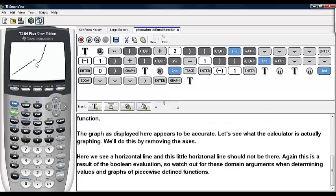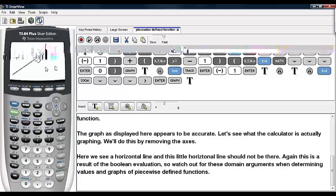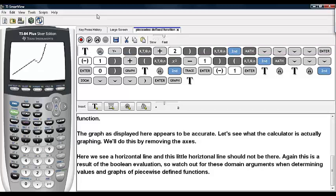And here we can see this little horizontal line that was hidden by the axes being shown. But this is what the calculator is actually graphing. This little horizontal line there should not be part of the graph. Again, this is a result of the Boolean evaluation. So watch out for these domain arguments when determining values and graphs of piecewise defined functions.